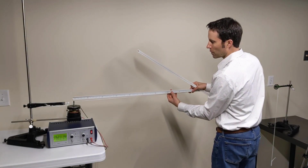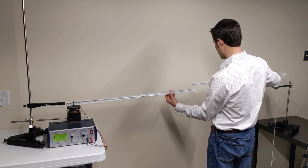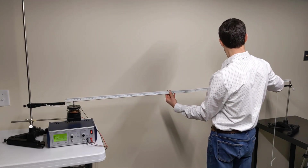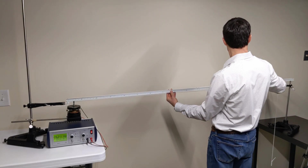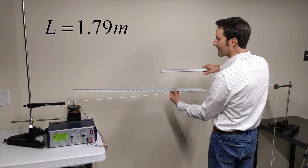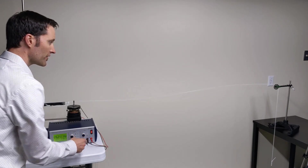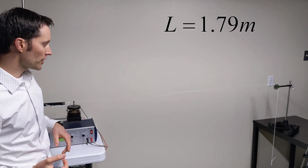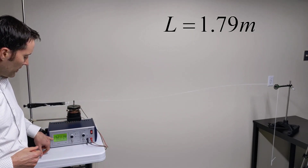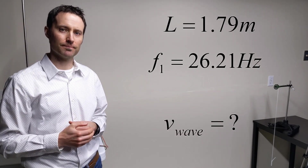I'm going to turn the oscillator off to make it easier to measure the string length. It's a little more than a meter, so I'll use two meter sticks. It looks like we're about 1.79 meters — 179 centimeters. So the length of the string is about 1.79 meters. Turning it back on, we can confirm the second standing wave: a string length of 1.79 meters with a driving frequency of 26.21 hertz. Question number one: how fast are the waves moving in that string?